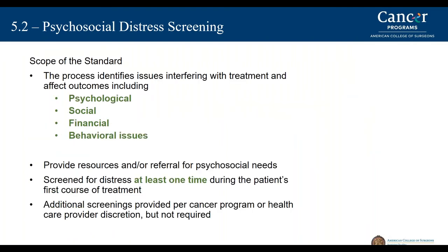The process must identify issues which interfere with treatment and affect the outcome of our cancer patients, including psychosocial, social, financial, and behavioral issues. We must have a document that provides the sources of referral for psychosocial needs, whether in the facility or outside the facility. Patients must be screened for distress at least one time during the patient's first course of treatment, but additional screenings provided by the cancer program or health provider may be given at the discretion of the institution.